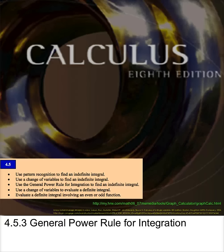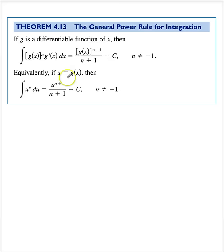We've been using the generalized power rule for integration, but now let's make it rigorous. Suppose I have a function. If I integrate u to the n du, then that's going to be u to the n plus 1 divided by n plus 1 plus c, provided n does not equal negative 1.